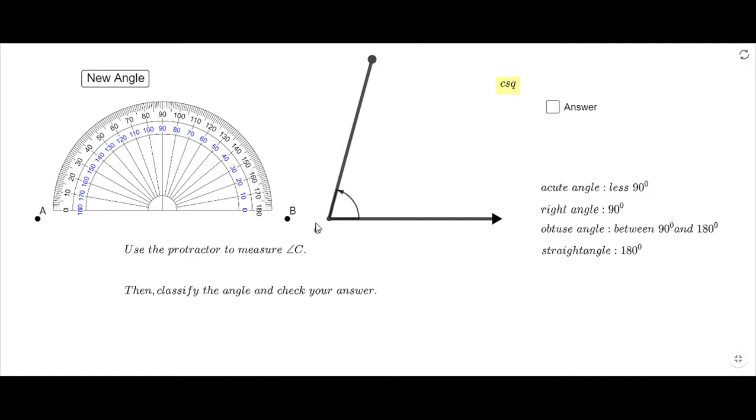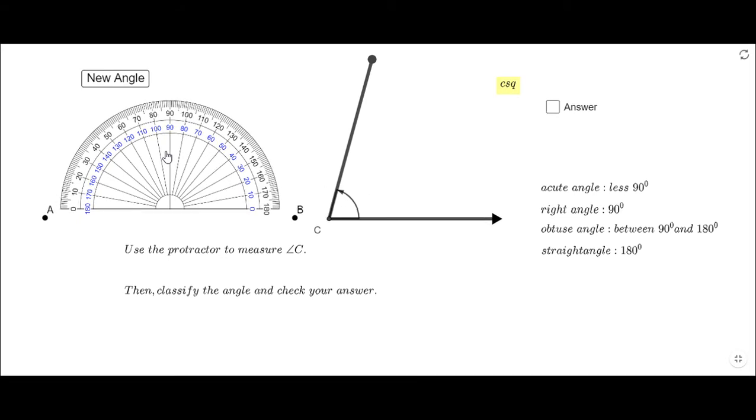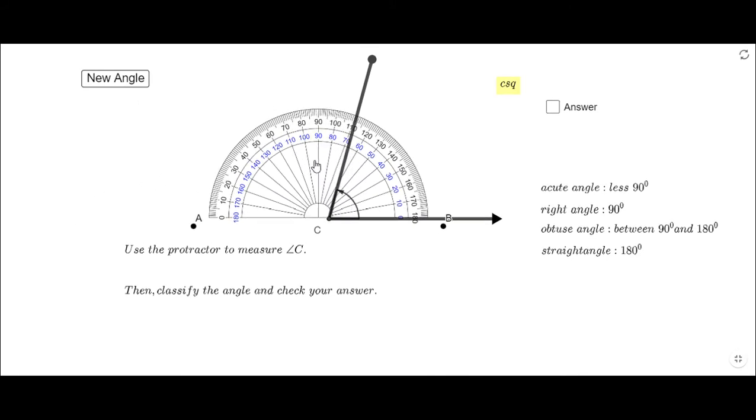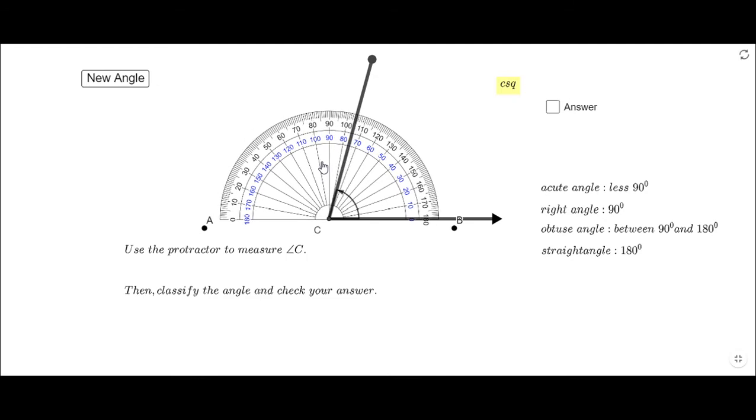This angle, which I call C, I want to measure. For that reason, I'm going to use this protractor and drag it here. You notice how I put the protractor. Point C, the vertex of the angle, is going to be right here in the middle. This side is going to go along and cross right here.